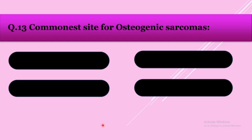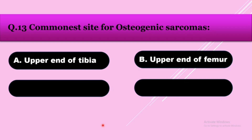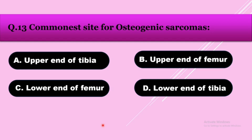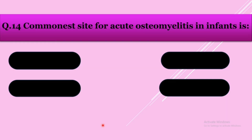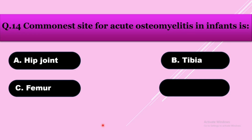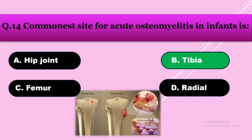Question number thirteen: The commonest site of osteogenic sarcoma — option A: upper end of tibia, option B: upper end of femur, option C: lower end of femur, option D: lower end of tibia. The answer is lower end of femur. Question number fourteen: The commonest site of acute osteomyelitis in infant — option A: hip joint, option B: tibia, option C: femur, option D: radius. The answer is tibia.